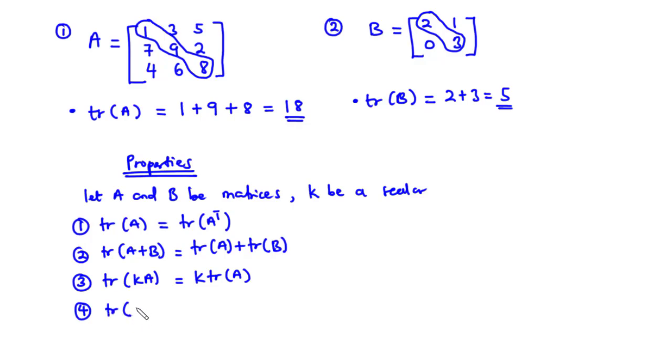Property 4: The trace of matrix AB is equal to the trace of matrix BA.